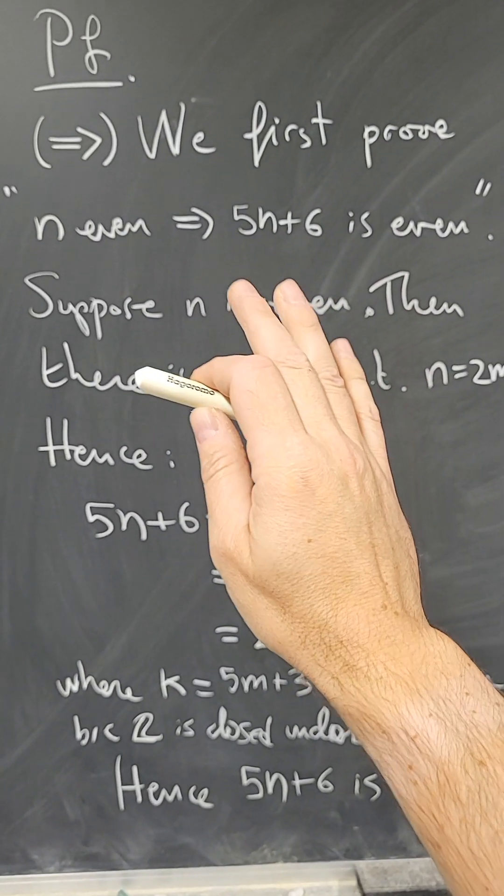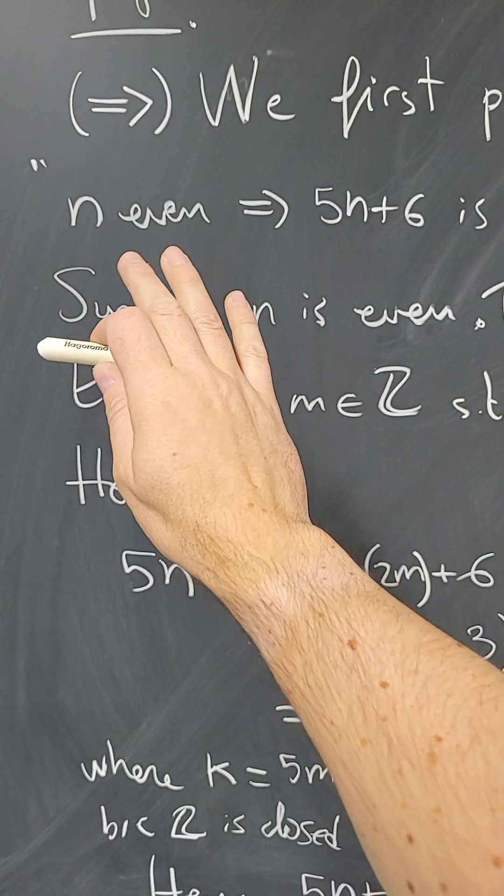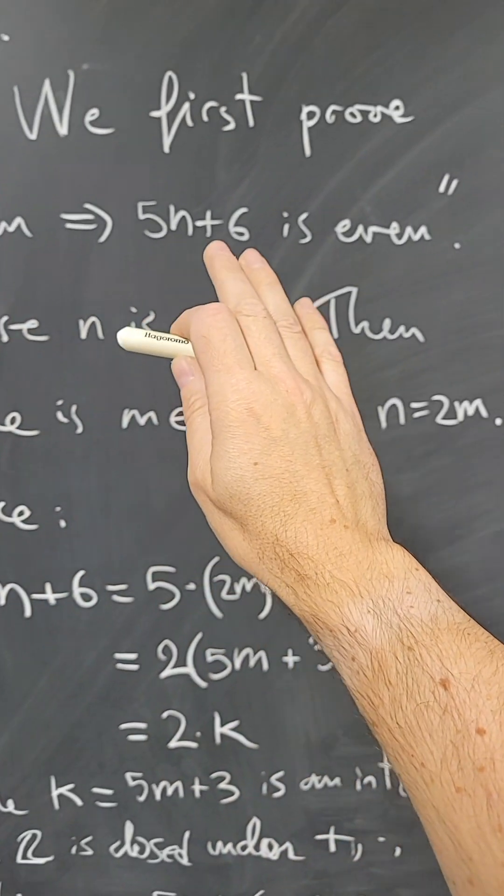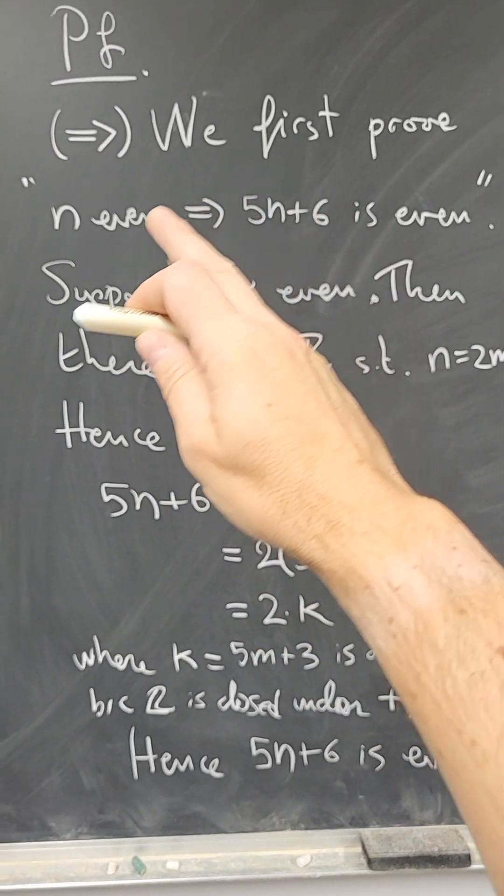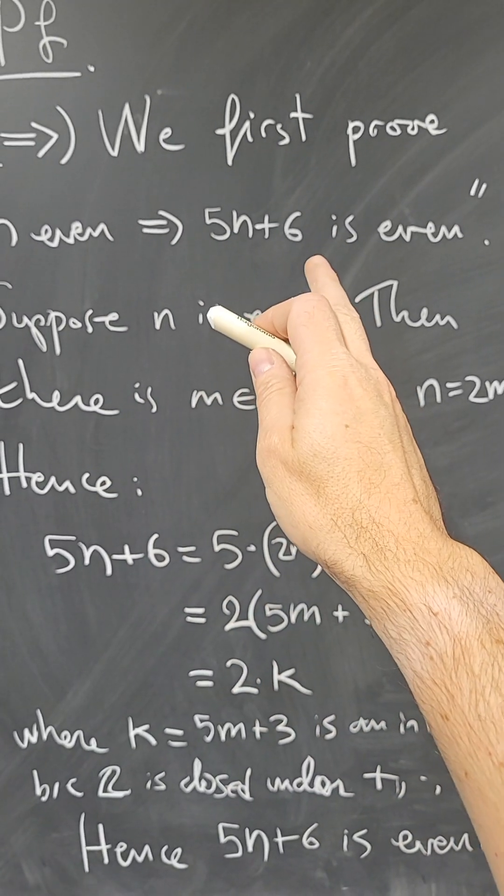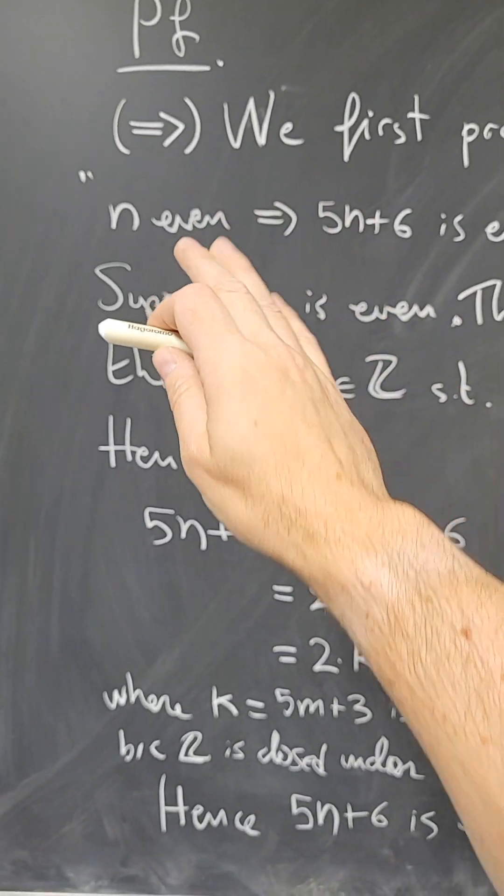This matters because then what I can assume is that n is even and only that. And I have to conclude that part there. And then afterwards, we'll prove the converse. And we will prove that 5n plus 6 is even implies that n is even.